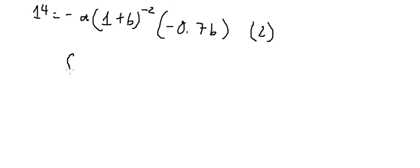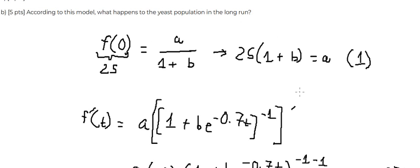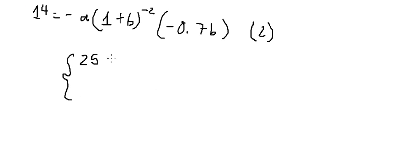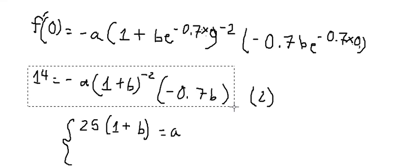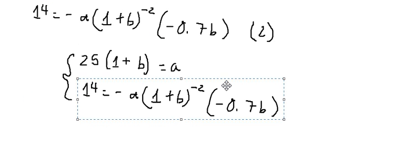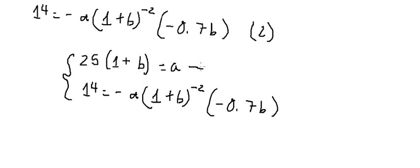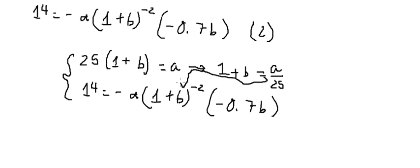After we get this, we have two equations. The first equation is this one, and the second equation is this one. For the first equation, we divide both sides by 25. If we look carefully, 1 plus b is this expression here, so we substitute this into the second equation.